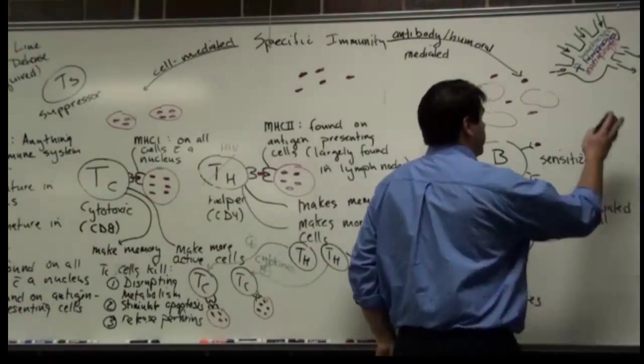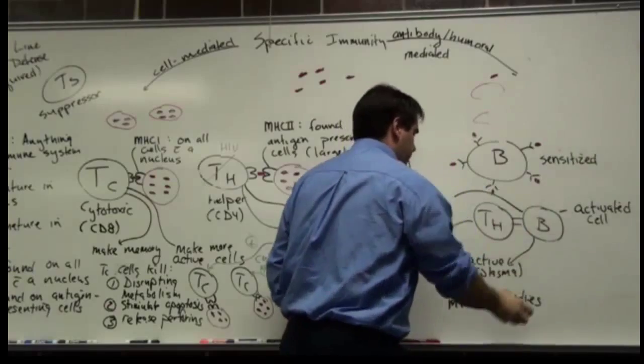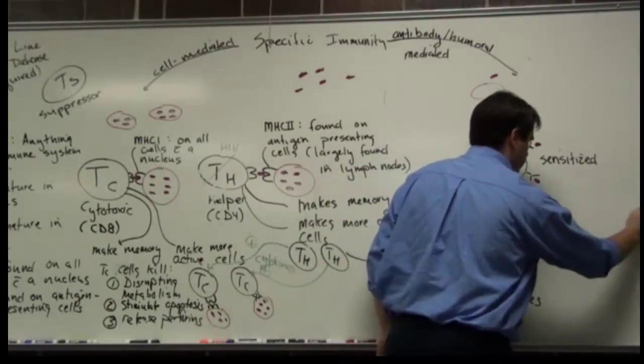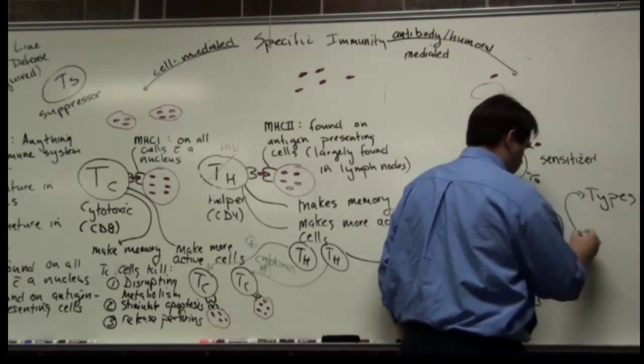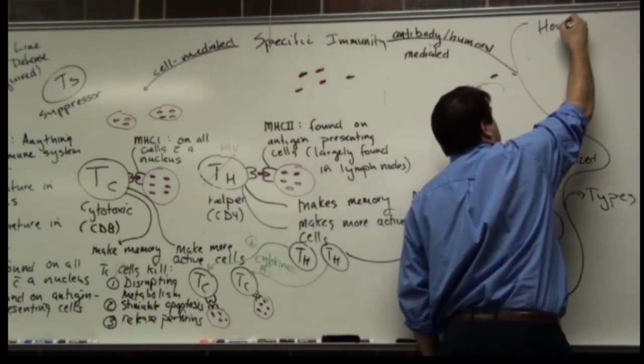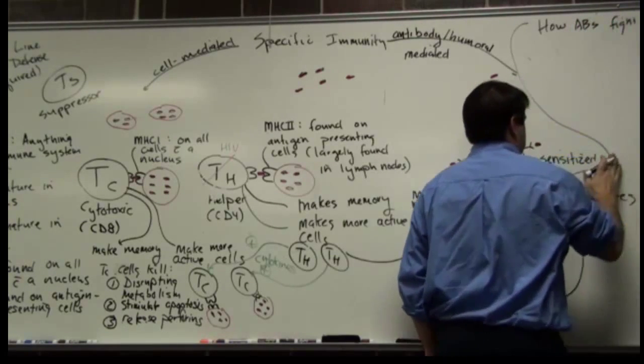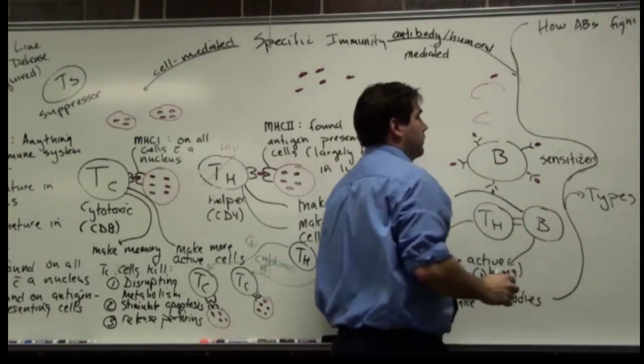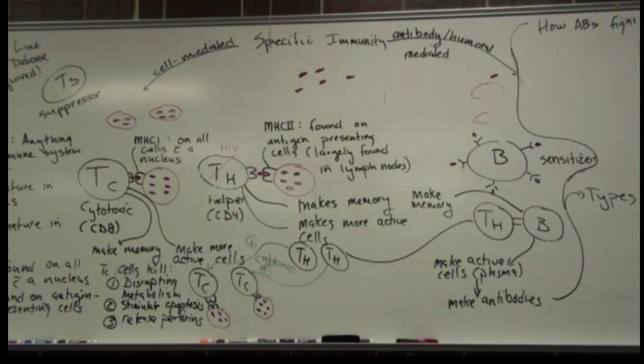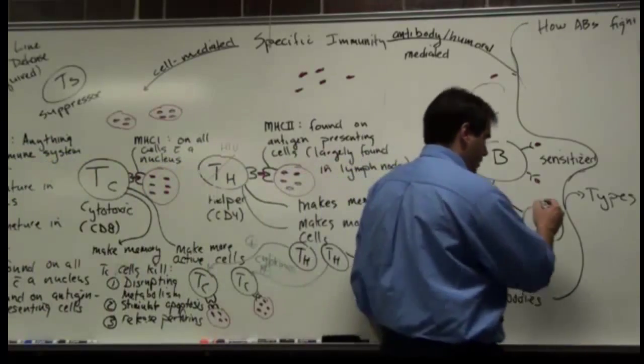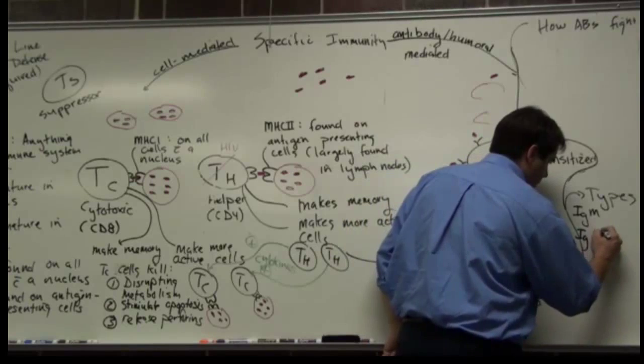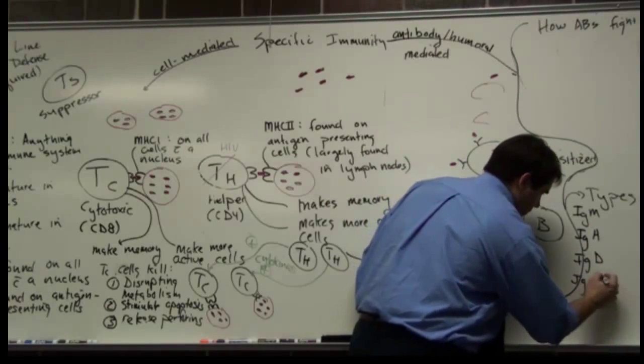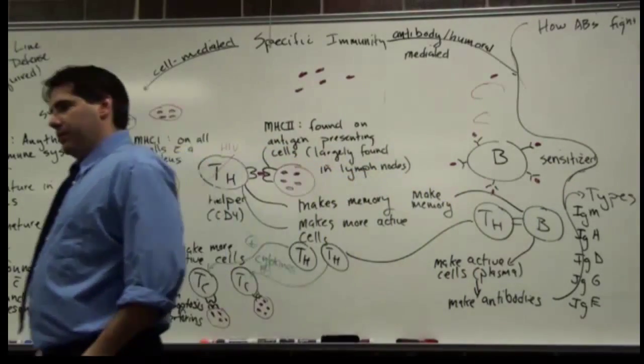I'm going to create a little bit of space because we need to talk about types of antibodies and how they kill. So we need to talk about types. We need to talk about how antibodies fight. The first one is types. There's five classes. I put them in order so they spell out MADGE. So it's IgM, IgA, IgD, IgG, and IgE.